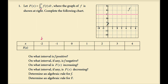We calculate the area of this rectangle: width 2, height 3, giving an area of 6. From 0 to negative 2 the area is 6. However, since we had to go backwards, the function value F of negative 2 is negative 6. Finding F of negative 1: the area of this rectangle is 3, but since we moved backwards, the function value is negative 3. From 0 to 0, no area is accumulated, so F of 0 is 0.